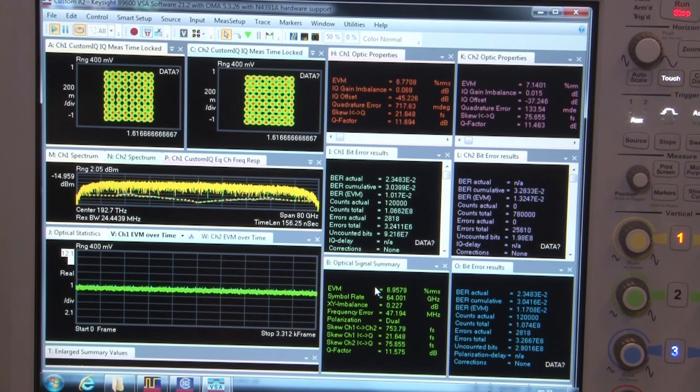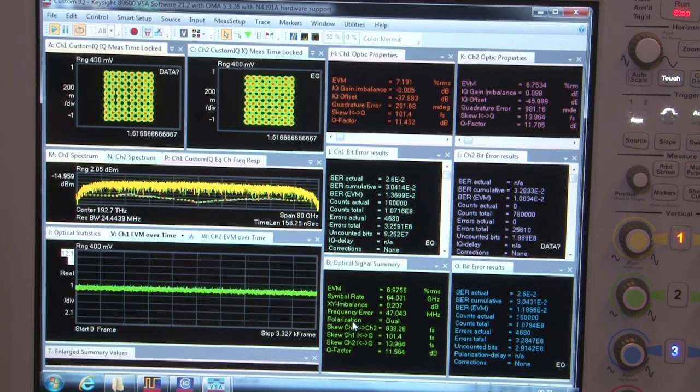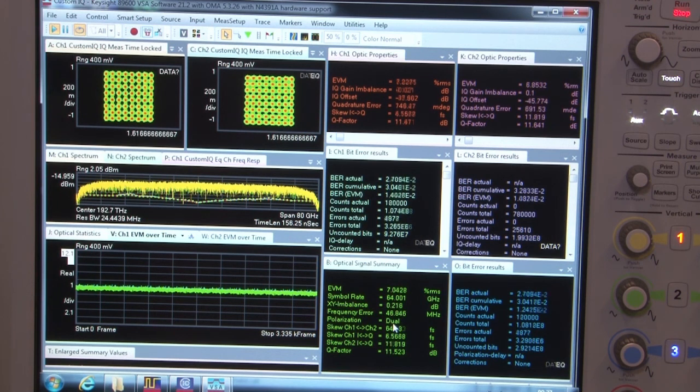On the left-hand side finally we have a screen that's called the optical signal summary. Pretty much similar to the statistics but without the statistical representation. So again we see the symbol rate, EVM, XY imbalance, frequency error. The polarization type is reported down here. So we see if it is a dual polarization or single polarization signal. And again the set of skews is reported down here.